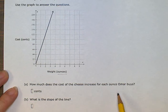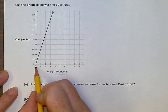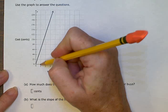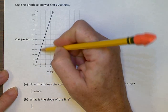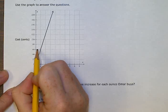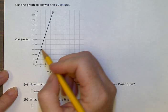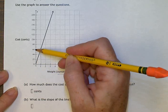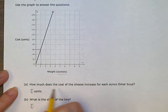For each ounce means for one ounce. So how much does it change from zero to one? So at one, the graph is now up here. So the cost changed from zero to sixty-six cents. So it costs sixty-six cents.